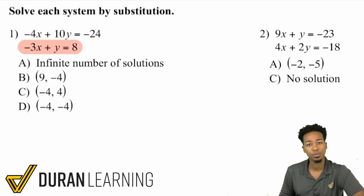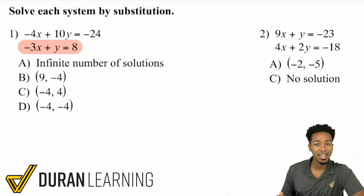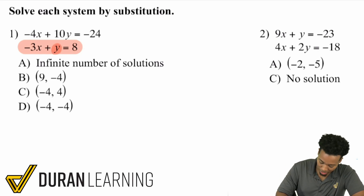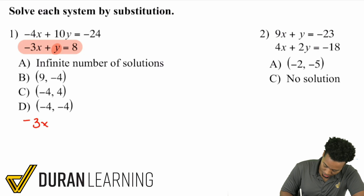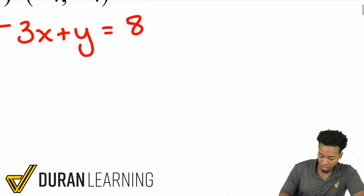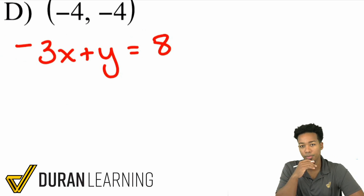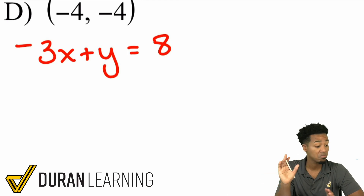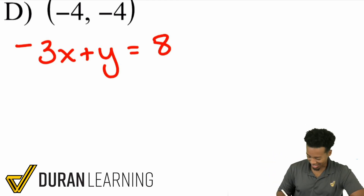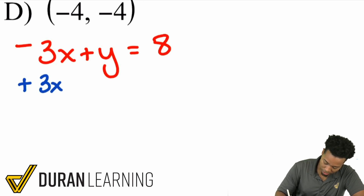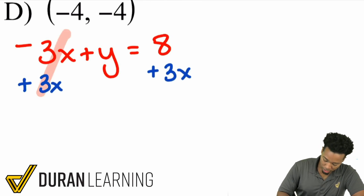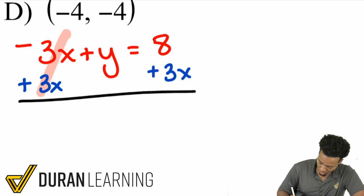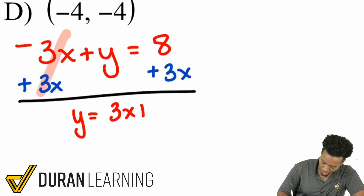Let's pay attention to the second equation: negative 3X plus Y equals 8. Notice how it's possible for us to get that Y by itself. We can move that negative 3X over to the right side by adding 3X to both sides. That eliminates it on the left side, leaving us with Y equals 3X plus 8.